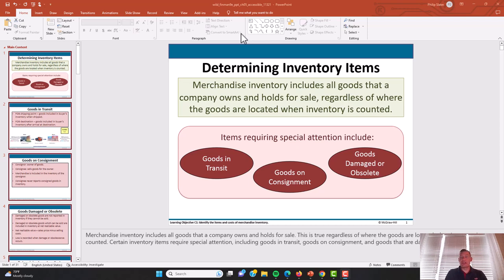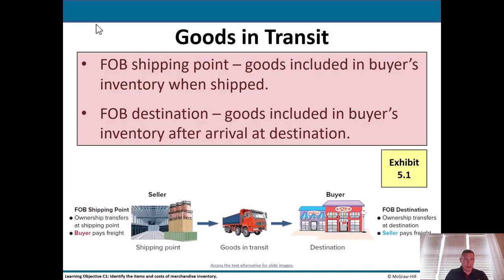Merchandise inventory includes all goods that a company owns and holds for sale, regardless of whether the goods are located and when the inventory is counted. Items requiring special attention include goods in transit, goods on consignment, and goods damaged or obsolete.